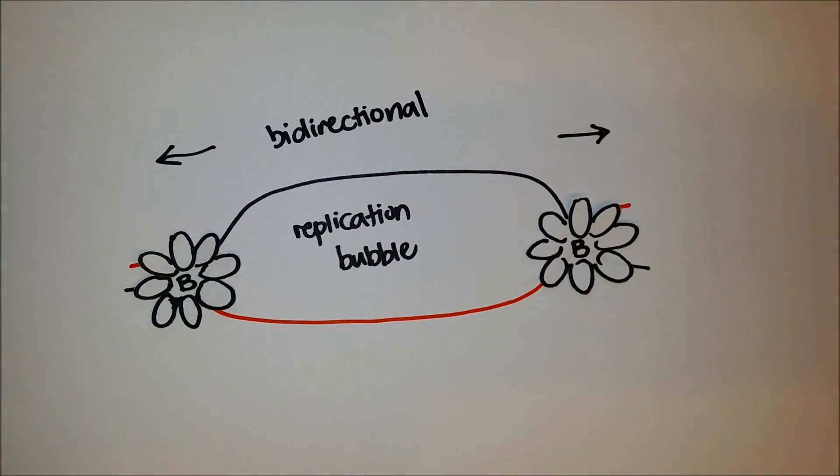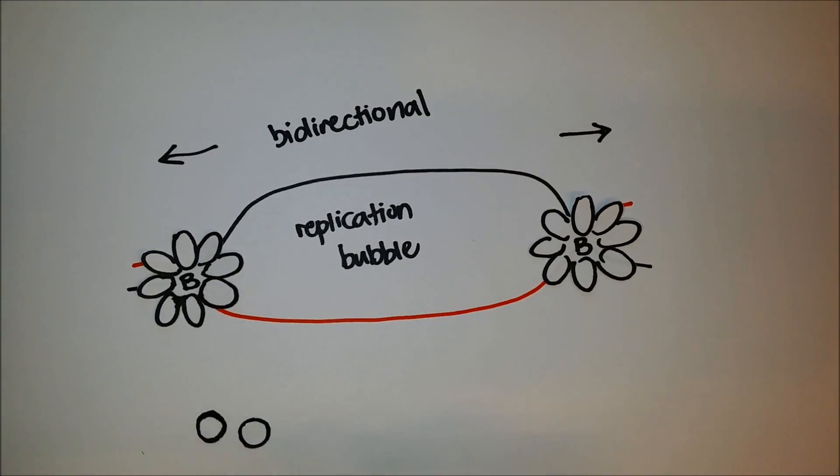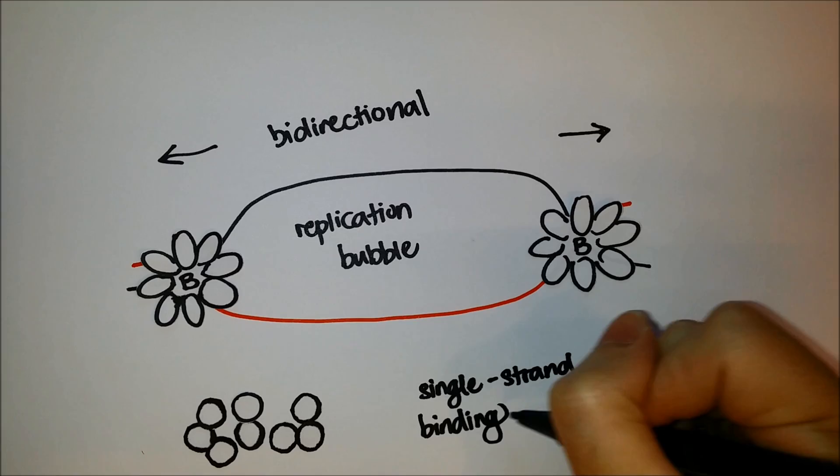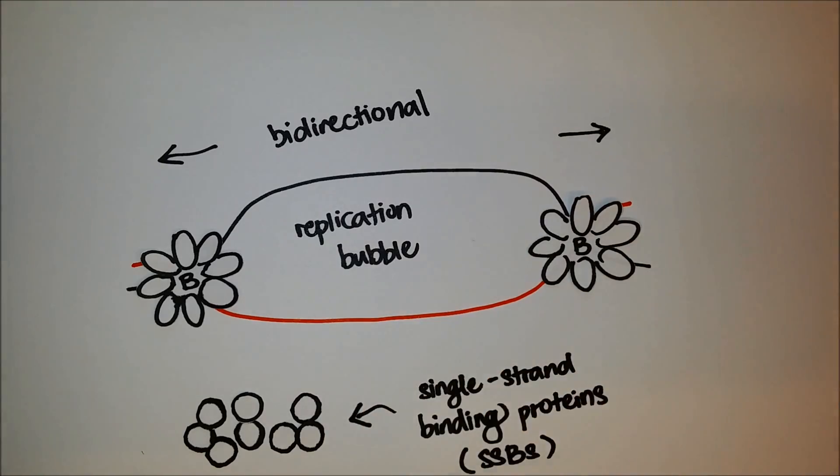The unwound DNA consists of unpaired bases which do not renew, as they will be bound to single-strand binding proteins.